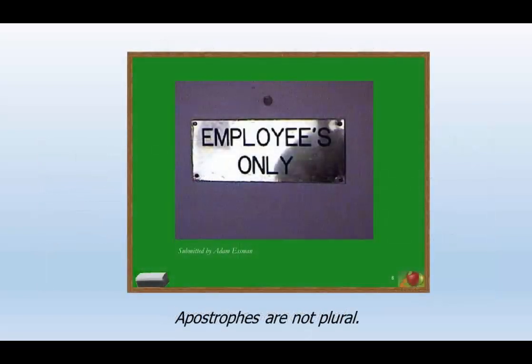Here is an example that some might wonder what's wrong with it. When you aren't sure if a phrase is correct, put it in an entire sentence. In the graphic, we see 'Employees only.' But if it were a sentence, it might read 'Employees only may enter here.' When we turn it into a sentence, we can see that the apostrophe to show possession is completely wrong. 'Employees' here is simply a plural.